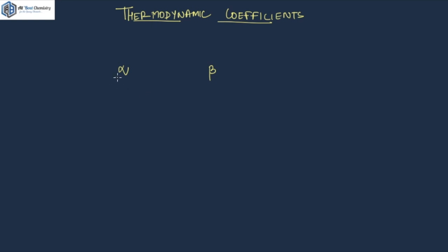What is the relationship between alpha and beta? We know a formula that alpha upon beta equals something, and how that particular formula is being derived. We will get to that particular concept as well, and we will solve questions related to that which have been asked in the previous years of your exams. So without wasting much time, let us try to understand all these two parameters.